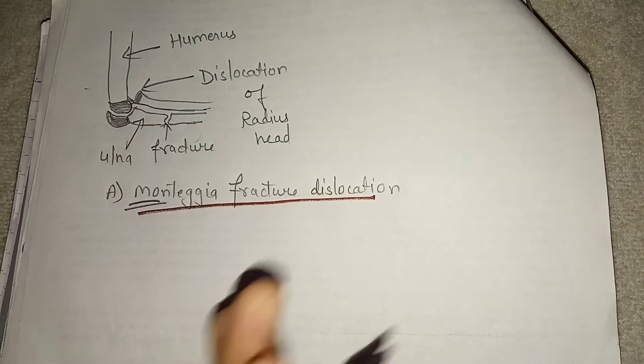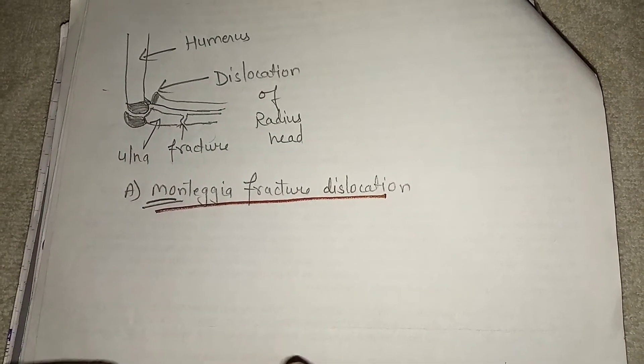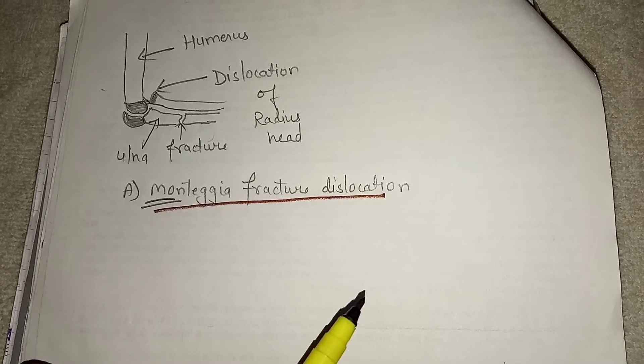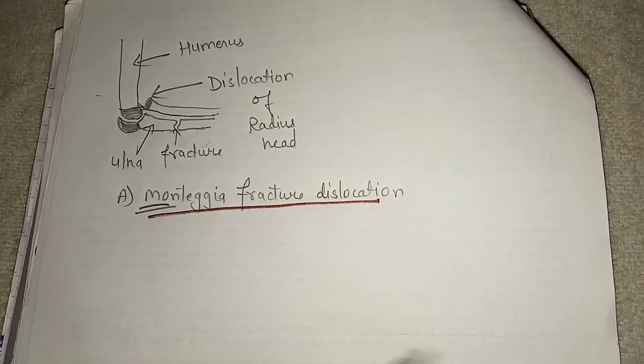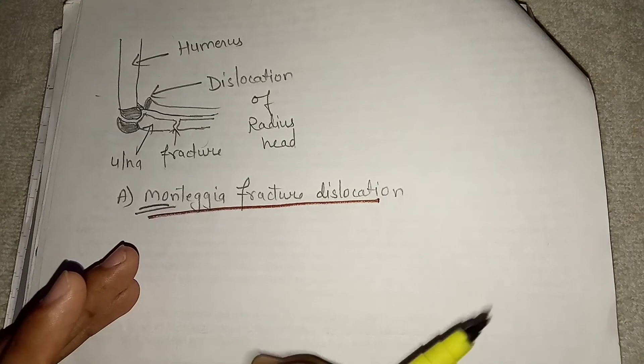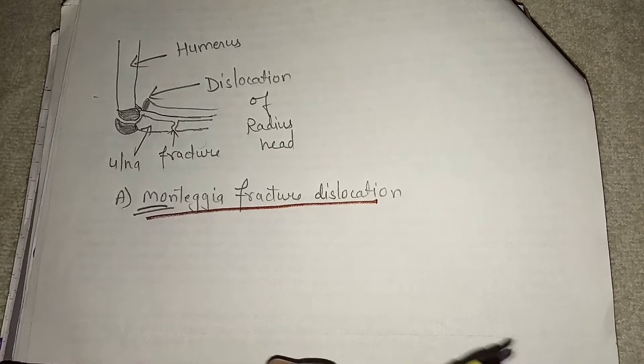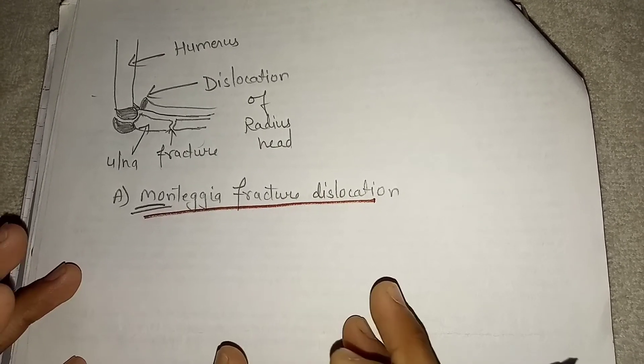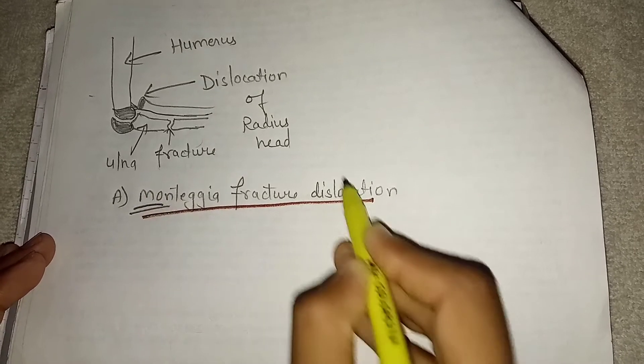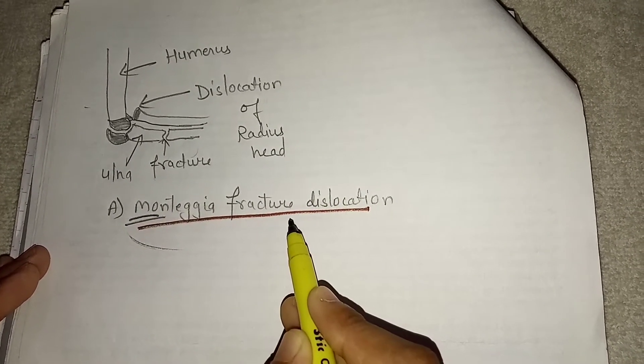Now what is the mechanism of injury? What is the cause behind this fracture? So if a person falls on an outstretched hand with forced pronation, this fall may increase the risk of having this type of fracture that is called Montagia fracture dislocation.